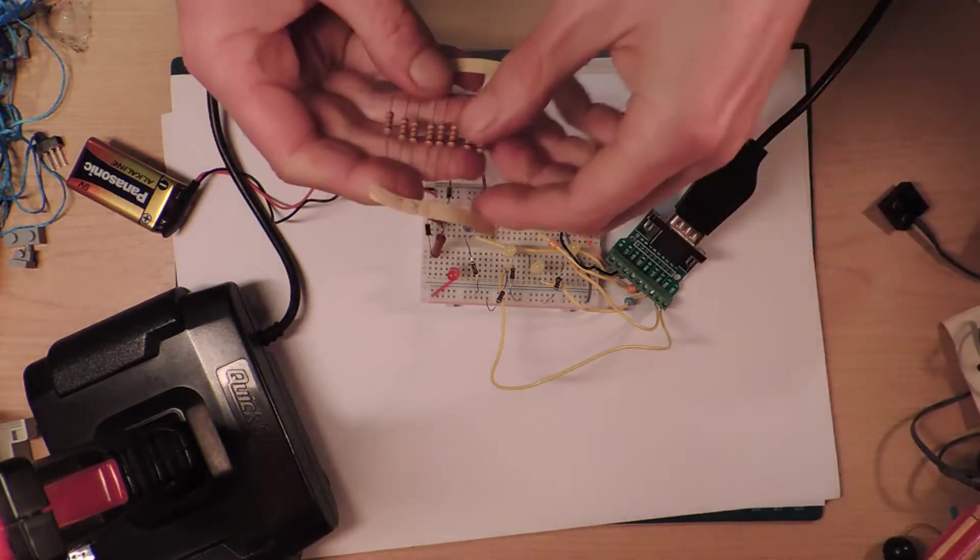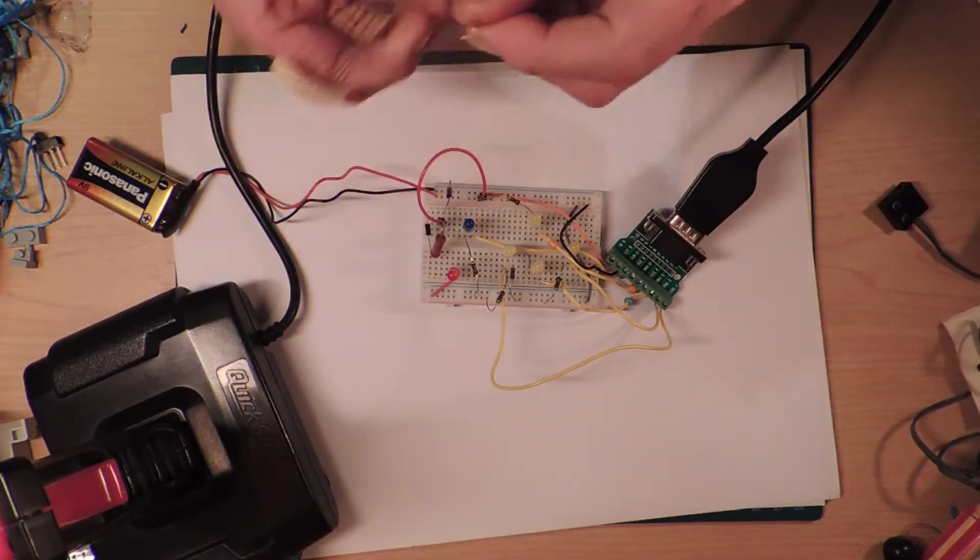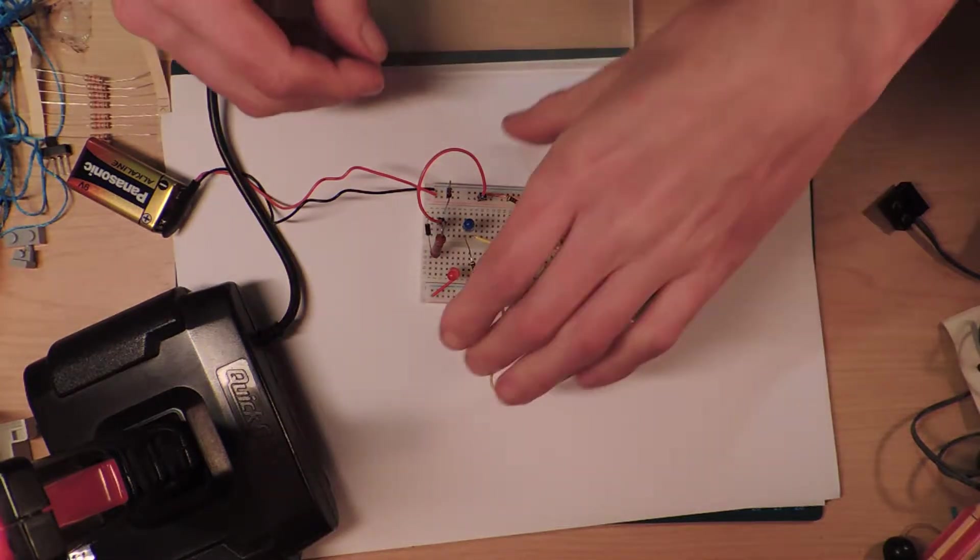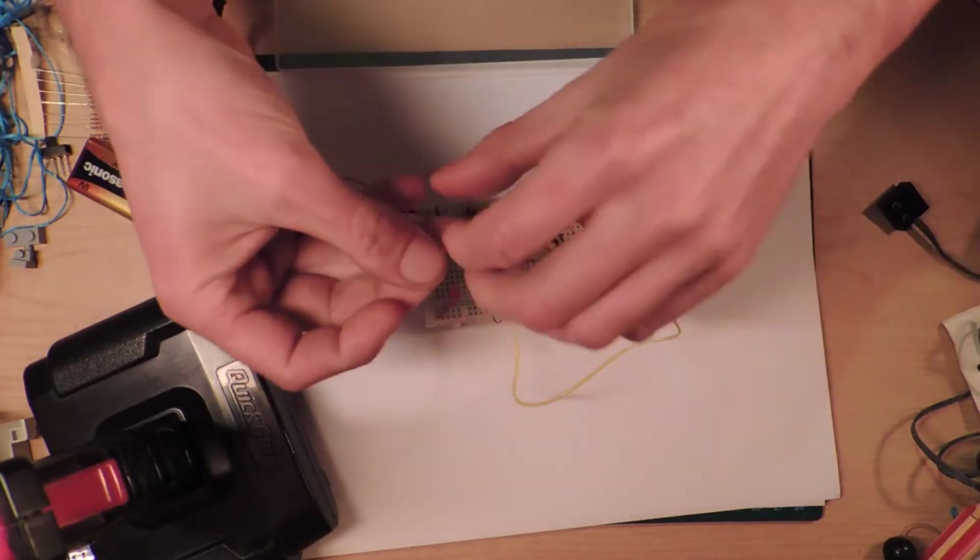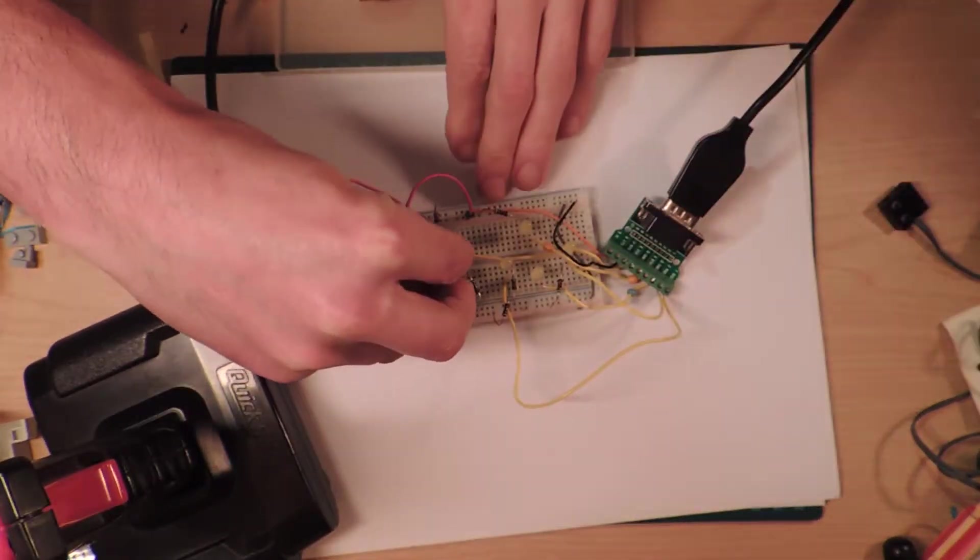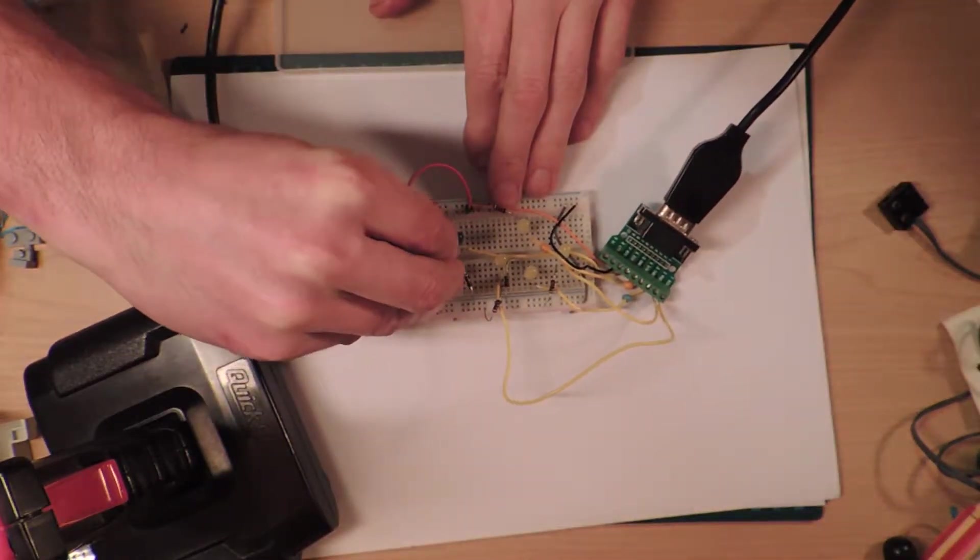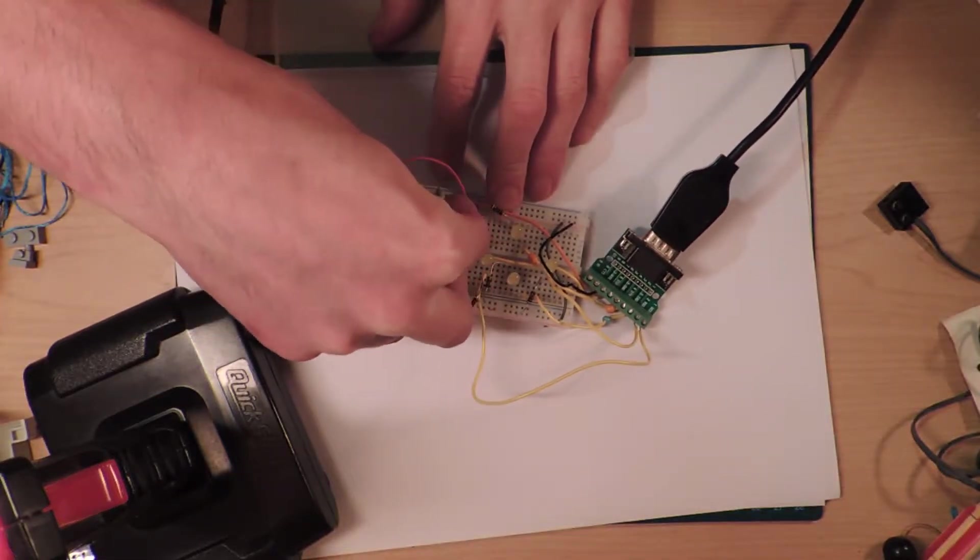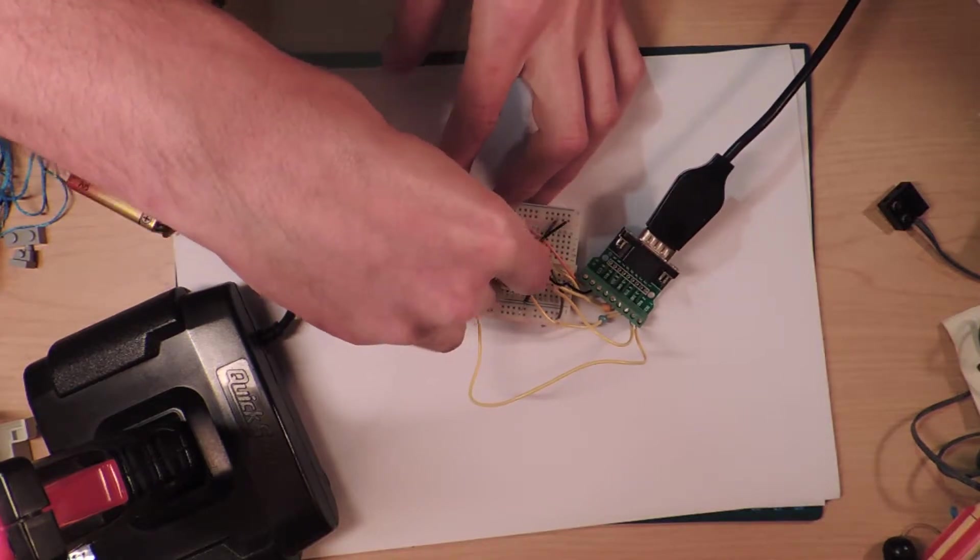So I've got a couple of variety of resistors here. And I'm going to use these 1.2 kilo ohms. So 1200 ohm resistor. And that's just going to go, so this is going to be a bit messy.